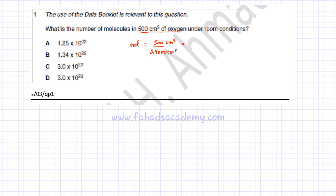If we do the calculation, 500 divided by 24,000, the answer is 0.0208 moles, rounded to three significant figures. So that's the amount of oxygen that we have.